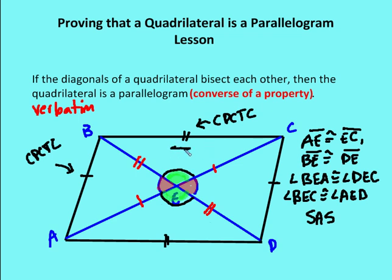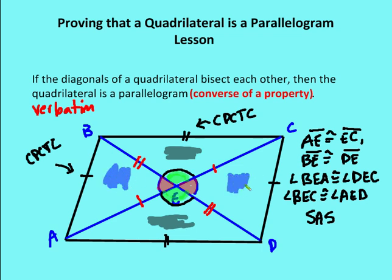Triangle BEC is congruent to triangle DEA by side-angle-side, and triangle BEA is congruent to triangle DEC by side-angle-side. Now I know I have another set of alternate interior angles that are congruent. By CPCTC, here's one pair, and here's the other pair by CPCTC. So I know that BA is parallel to CD. Then I have another pair of alternate interior angles from the congruent triangles CED and AEB that are congruent, so I know that BC is parallel to AD. Now I have a parallelogram.